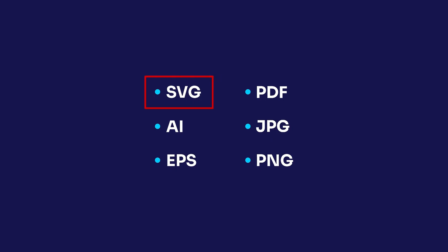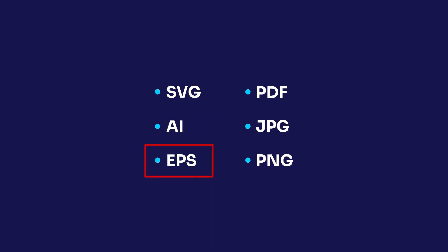SVG is an editable source file that can be used and edited in multiple softwares like Adobe Illustrator, Inkscape, CorelDRAW, Affinity Designer, etc. AI is also an editable source file but specific to Adobe Illustrator. EPS is an open source vector file mostly used for printing purposes. PDF is an important file format for the client — it is editable and can zoom to infinity without any loss in design quality. PDF is widely supported, which is crucial since many clients cannot open source or vector files that require specific design software.